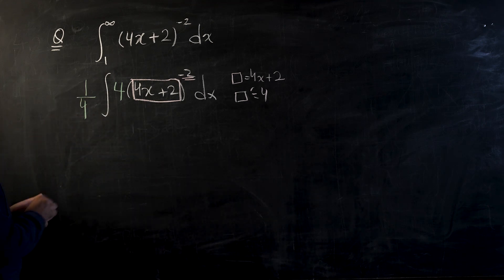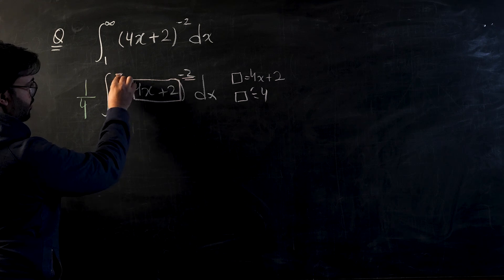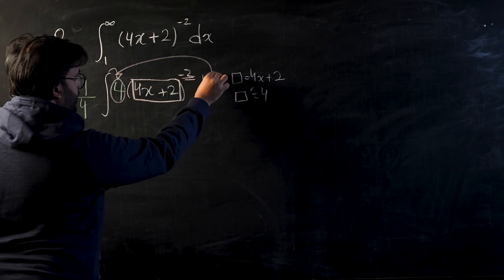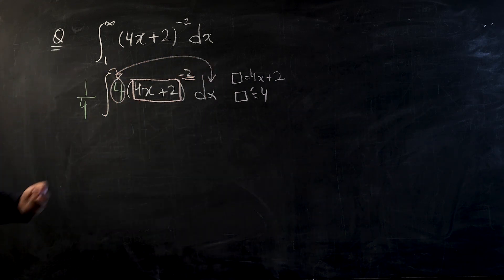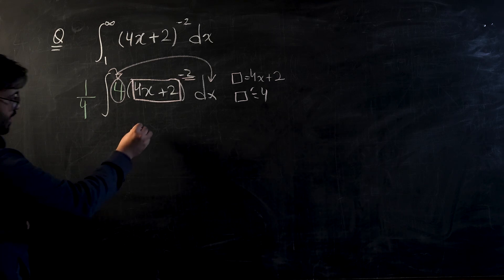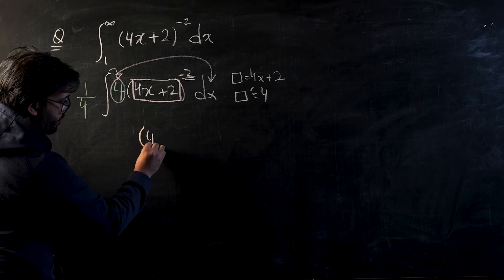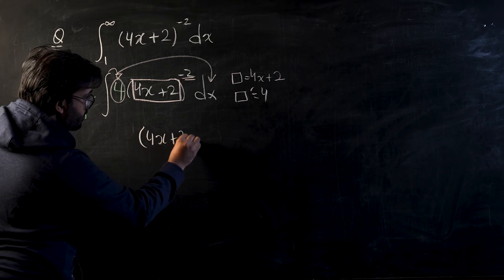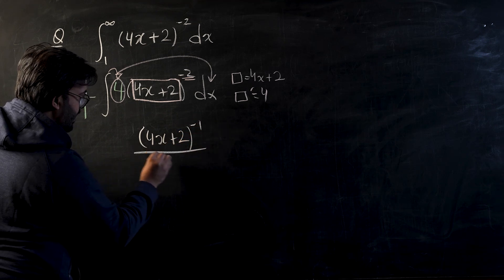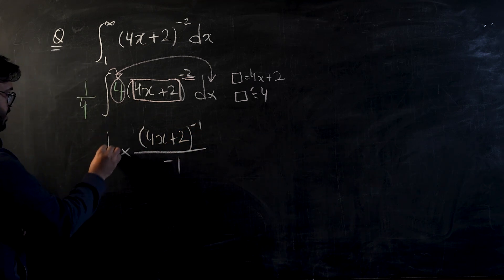And now once the condition is fulfilled, we know that these three things are going to disappear. You're allowed to integrate this power now, and hence your power will integrate to (4x+2) to the power of negative 1 over negative 1. And do not forget this 1 by 4 which was sitting outside the integral side.